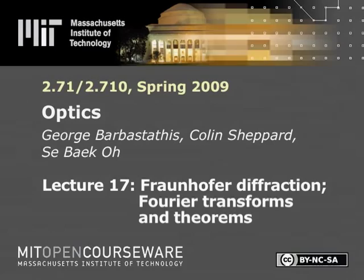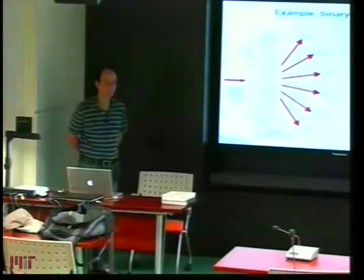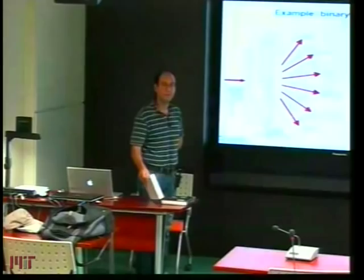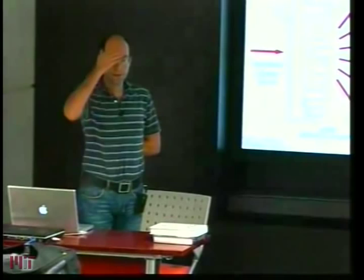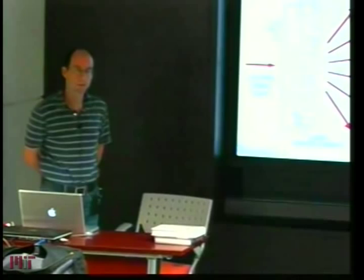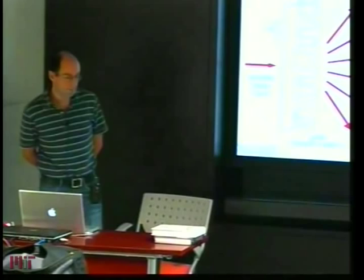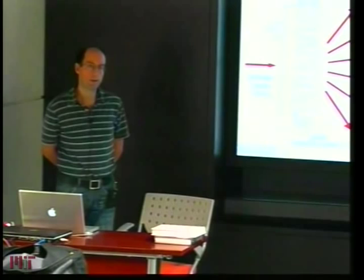A little bit of housekeeping before we continue. You may have noticed that in the reading assignments, I have started posting from Goodman's book. There are pros and cons about this. Goodman is very good if you are an engineer, especially electrical or mechanical, because you are used to thinking about systems, block diagrams, transforms, and so on. It is very nicely written this way, but it's a little bit mathematical. Hecht is more on the physics side — written for junior or sophomore physics students. They are very nicely complementary.